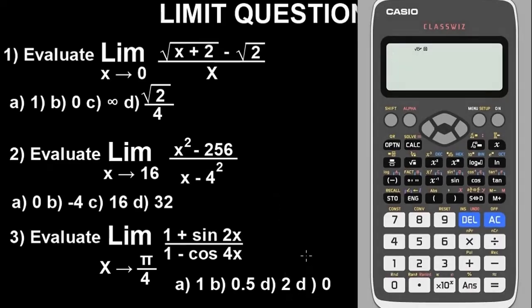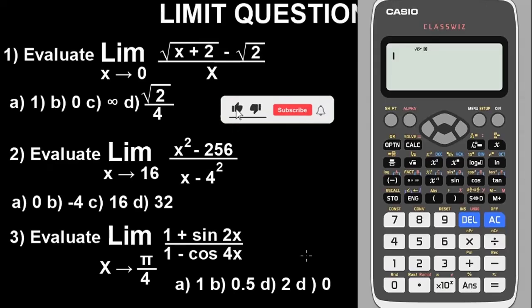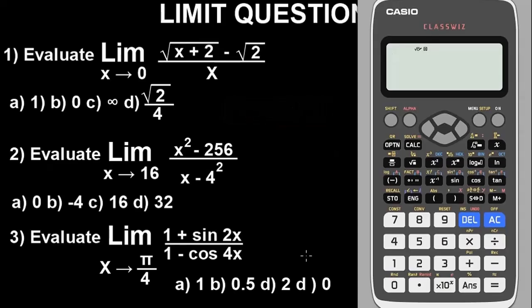This is a Casio fx-991 ES Plus calculator. I have already produced a video on how to do this with the white Casio fx-991 ES, so if you want to watch that video or if that's the calculator you are using, check the channel playlist. Search for my video on limit calculator techniques with the ES Plus calculator and you're going to see it. This ES calculator is a bit different from the white one.